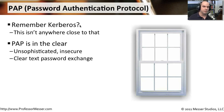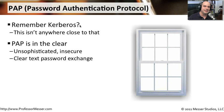If you recall Kerberos from an earlier video, there was a lot of encryption and a lot of communication to certain servers — it was a multi-step process. PAP is nothing like that. PAP is incredibly simple in the way that it works. Everything that's communicated with PAP is completely in the clear. There's no encryption whatsoever. If I were to type my username of James and my password of Professor, all of that would be sent in the clear across the network to the other side, where it would be interpreted and I would be allowed access or not.